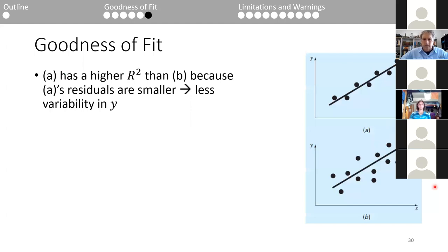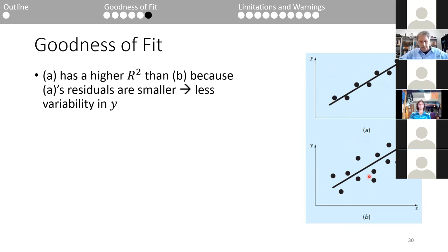Here are two data sets: the top one hugs the line tighter, the bottom one is more spread out. If data points hug the line tighter, the residuals are small and the sum of squared residuals is smaller, so R² for the top data set is higher than for the bottom. The top has a high R², the bottom has a low R², relatively speaking.